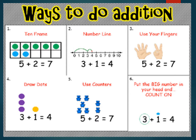There are different ways of doing addition. First is counting on a frame of ten — five and two are added and the answer is seven. Second is the number line, which we will be learning today. Third is using your fingers, which you have already done in class one. Then drawing dots and counting them, and similarly using counters to add. Sixth is putting the bigger number in your head and counting on.